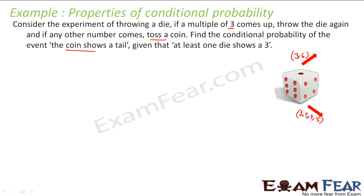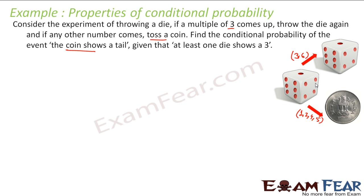In the first two cases (multiples of 3), I throw the die again. In the other case (non-multiples), I toss the coin. I have to find the probability of events where the coin shows a tail — so it may get tail or head — given that at least one die shows 3.